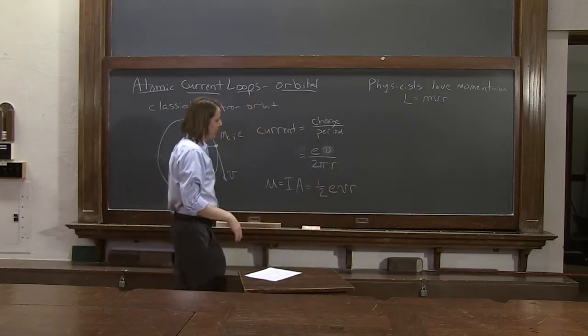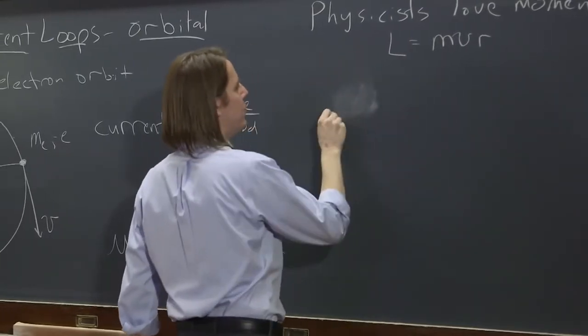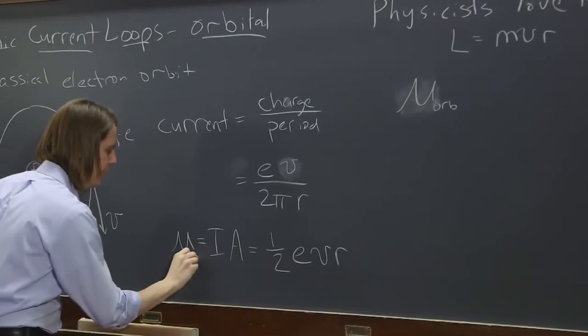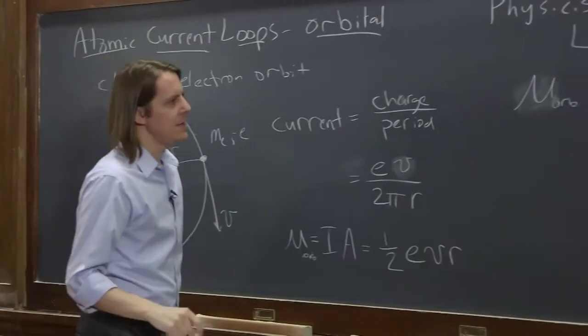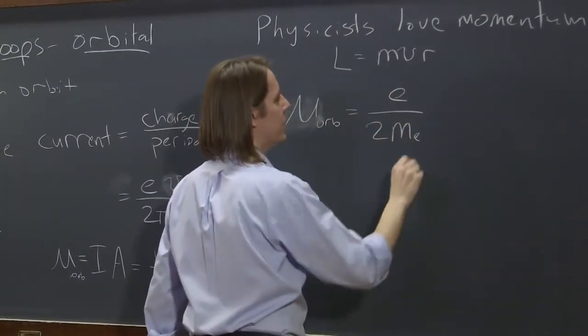And what you end up with is that the magnetic moment, the orbital magnetic moment, I'll put orb on here, and this is just of an electron since we've put in the charge of an electron, is e charge over 2 times the mass of the electron,